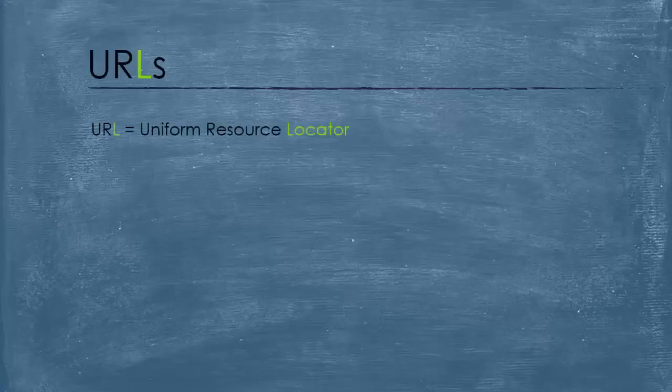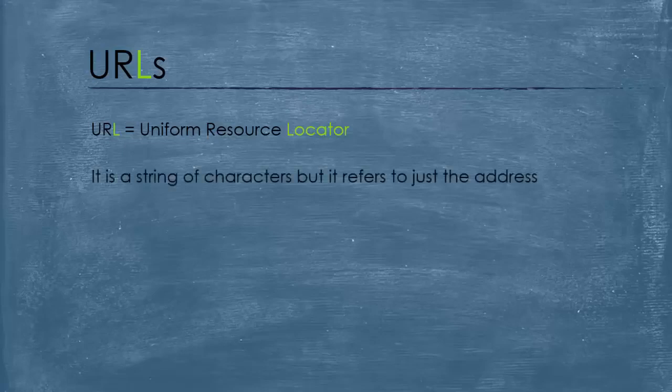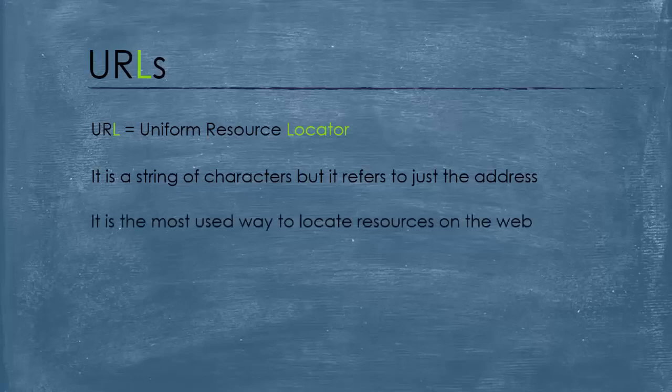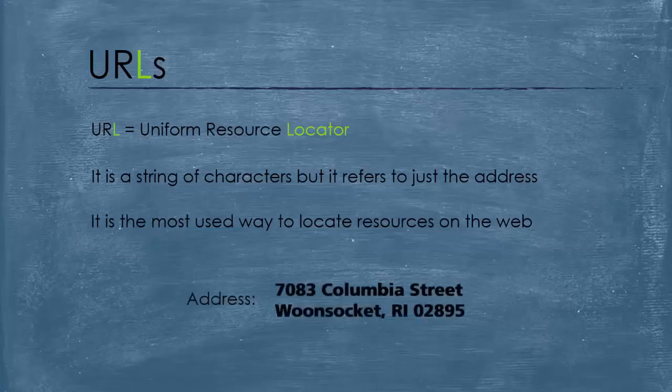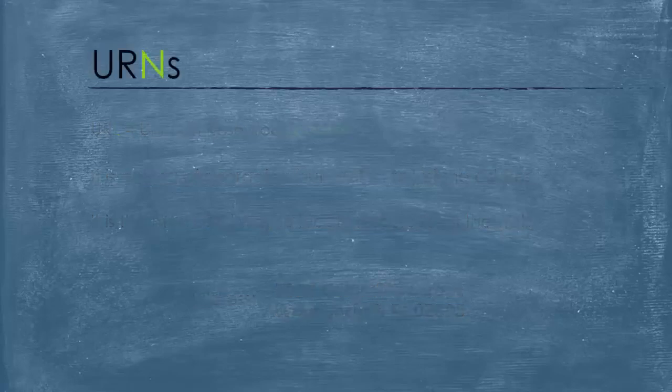A URL stands for Uniform Resource Locator, and it is pretty self-explanatory. It is also a string of characters, but it refers to just the address, just the location of the resource. And it is the most used way to locate resources on the web. For example, in our case, we can identify our friend by just using his location.